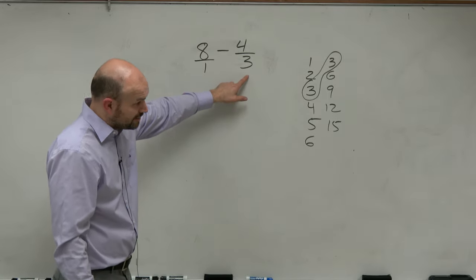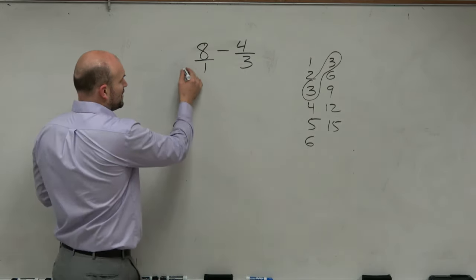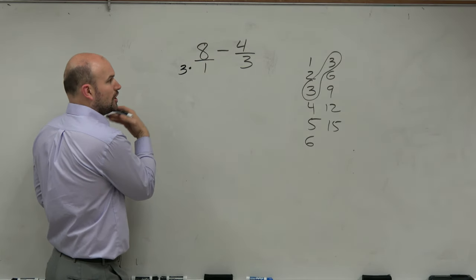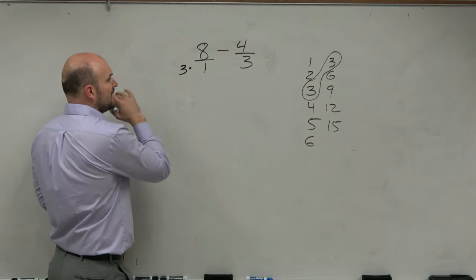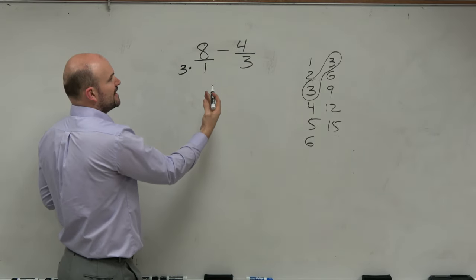So this is already 3, so I don't need to do anything to this fraction. But this is not 3, so I need to multiply this by 3. But I need to make sure I keep what we call equivalent fractions, meaning if I just multiply this fraction by 3 in the denominator, I'm going to change the value of the fraction.